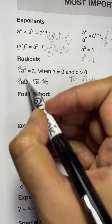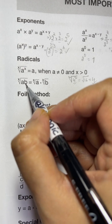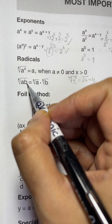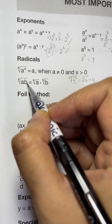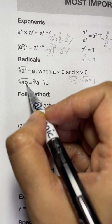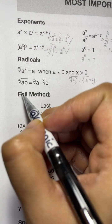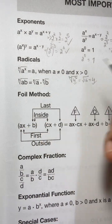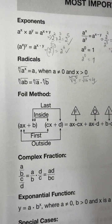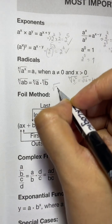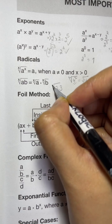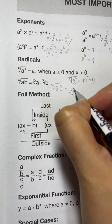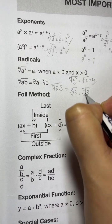When you have a times b under a root of x — two different numbers multiplied together under a root — you can split them up. For example, the square root of two times three can be written as the square root of two times the square root of three. You can split the radical across the multiplication.